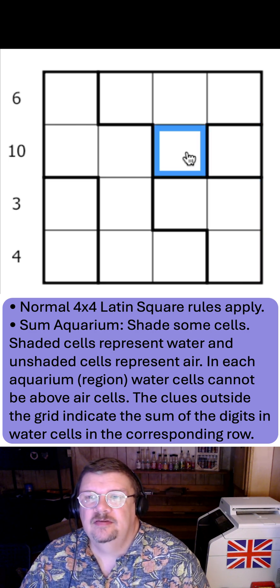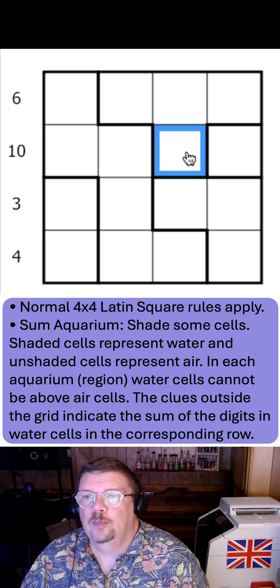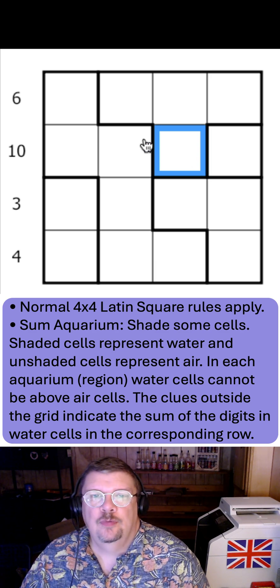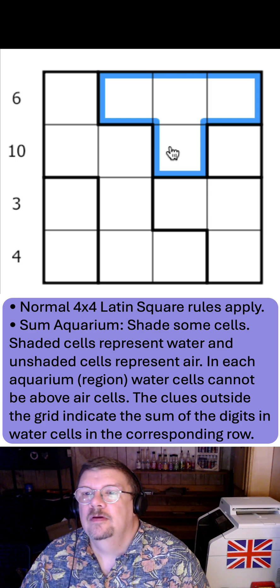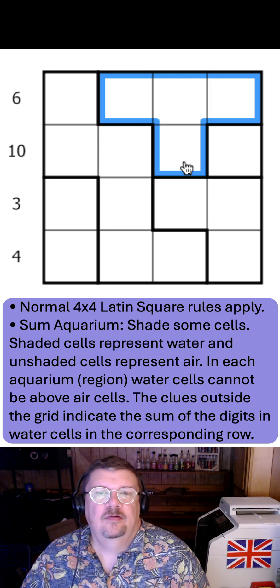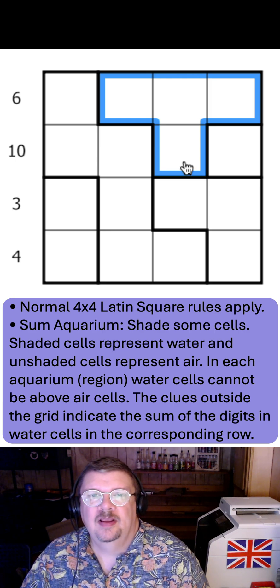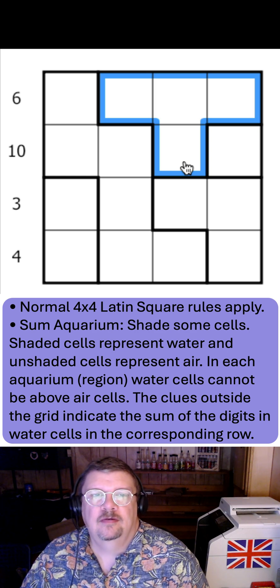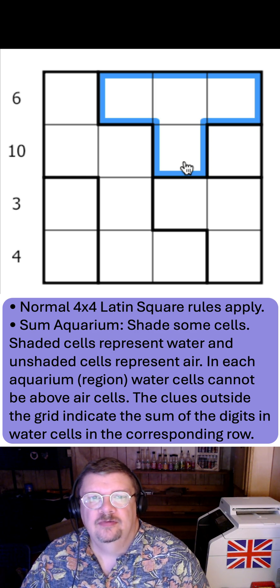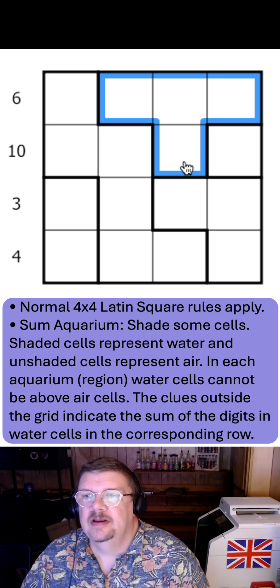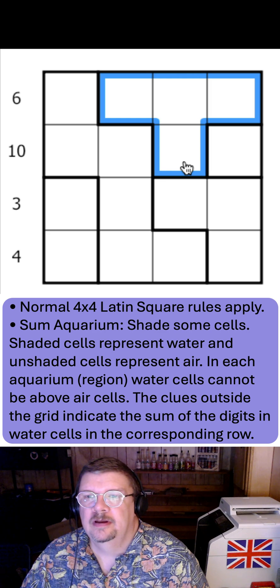Some aquarium shade some cells. Shaded cells represent water and unshaded cells represent air. In each aquarium region, water cells cannot be above air cells and water flows so that it is always level. So any horizontal row within one aquarium is either all water or all air. Clues outside the grid indicate the sum of the digits in water cells in the corresponding row.